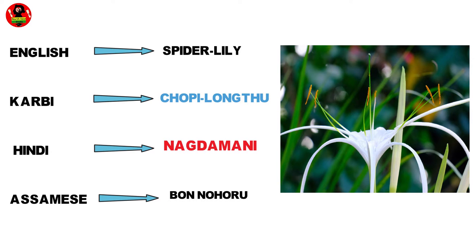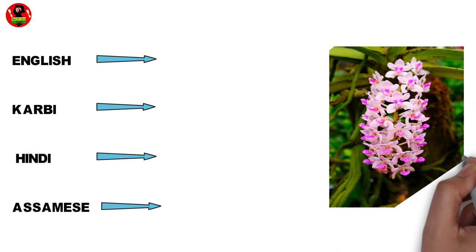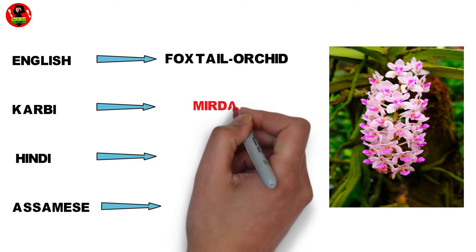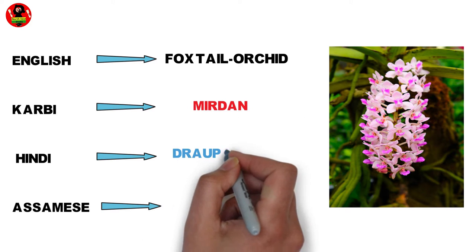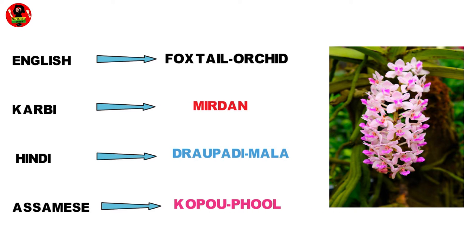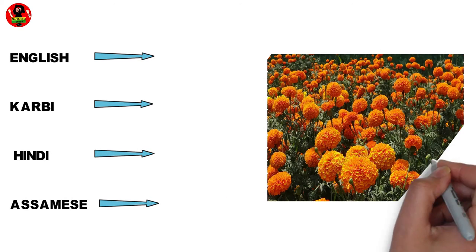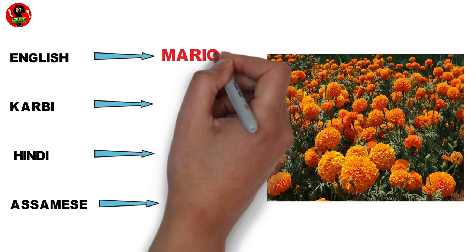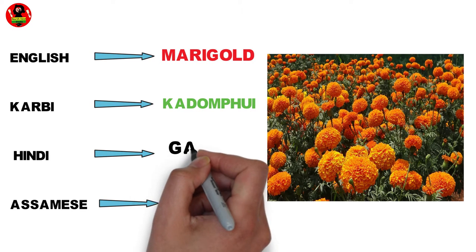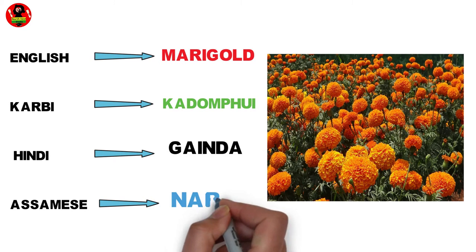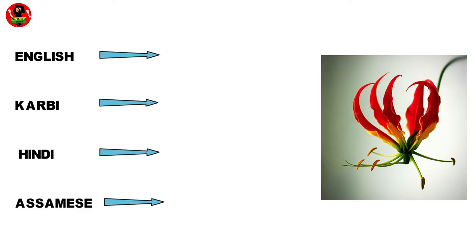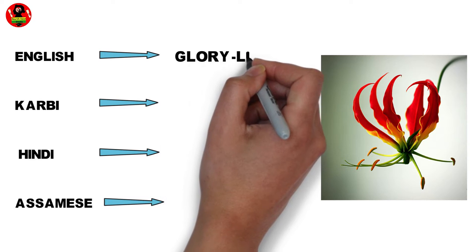One Nuru, Foxtail Orchid, Mirdan, Rupadi Malah, Kupupul, Marigold, Kadumpoy, Genda, Narji, Glory Lily.